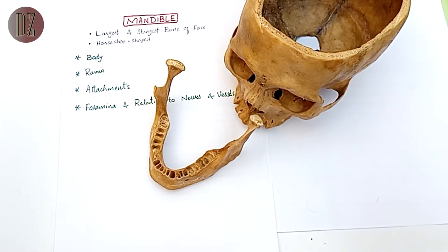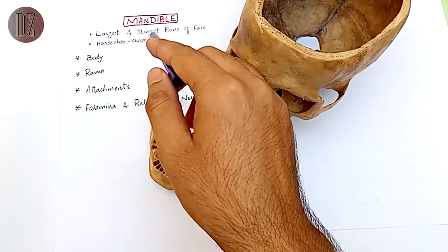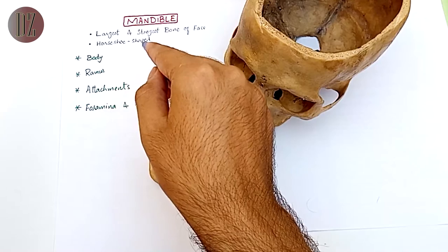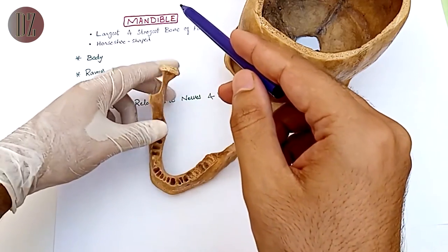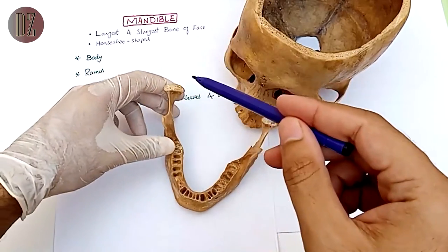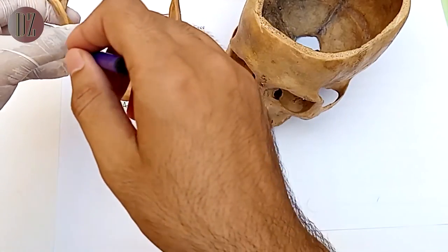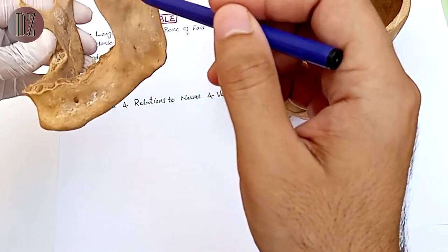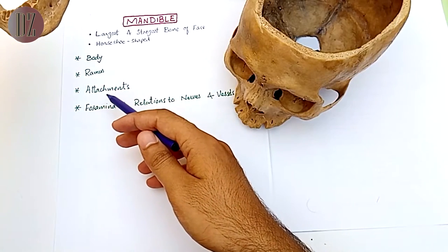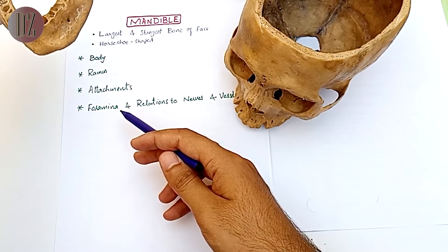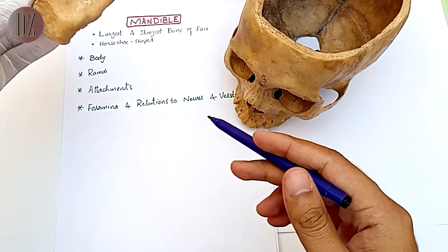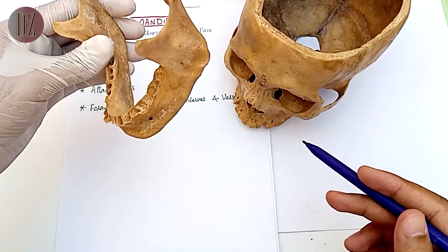In this video we are going to discuss the mandible. The mandible is the largest and strongest bone of the face. It has a horseshoe shape. We will discuss its body, ramus, attachments on the mandible, and finally the foramina and the structures passing through them.